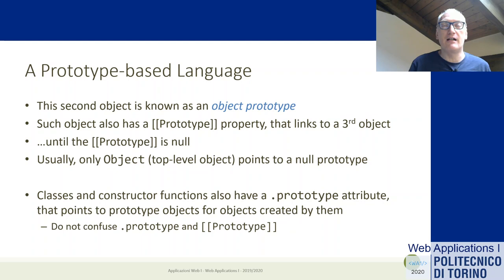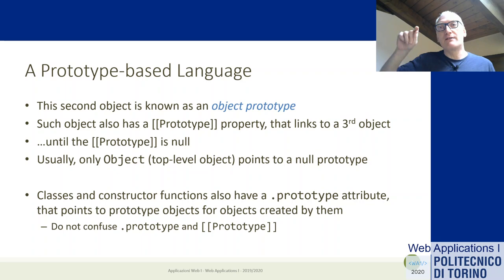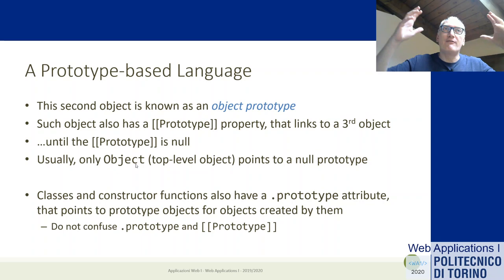The prototype object is also an object, so it contains another prototype property linking to a third object, forming a chain — like a linked list of objects pointing to objects through the prototype property. The chain ends when an object's prototype is null. Usually there's only one such object: the top-level object from which all others descend.